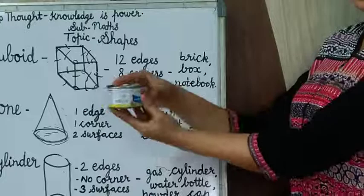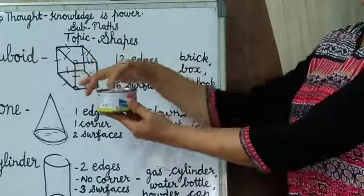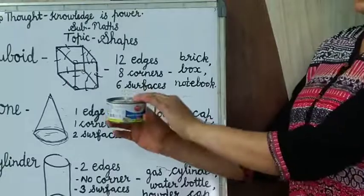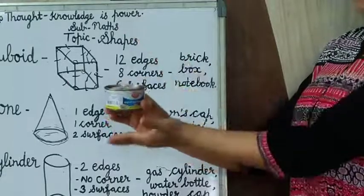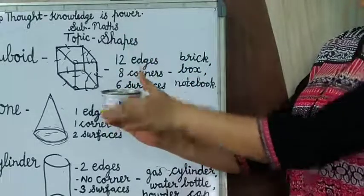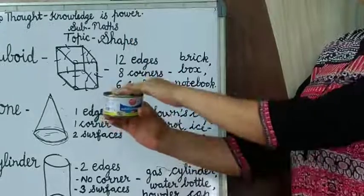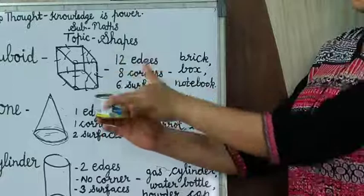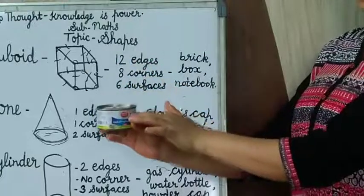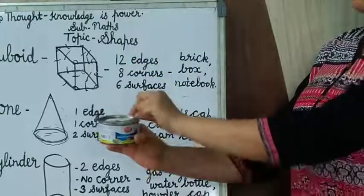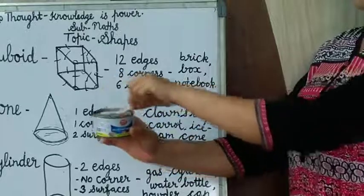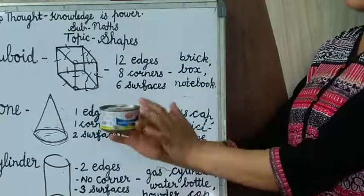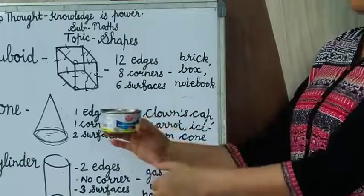And in between, it is also circular — only a curved surface. So, a cylinder is having top and bottom and curved — three surfaces. Top surface, bottom surface, and the third one is curved surface. And two edges: top edge, down edge. And a cylinder is having no corner at all. No corner.